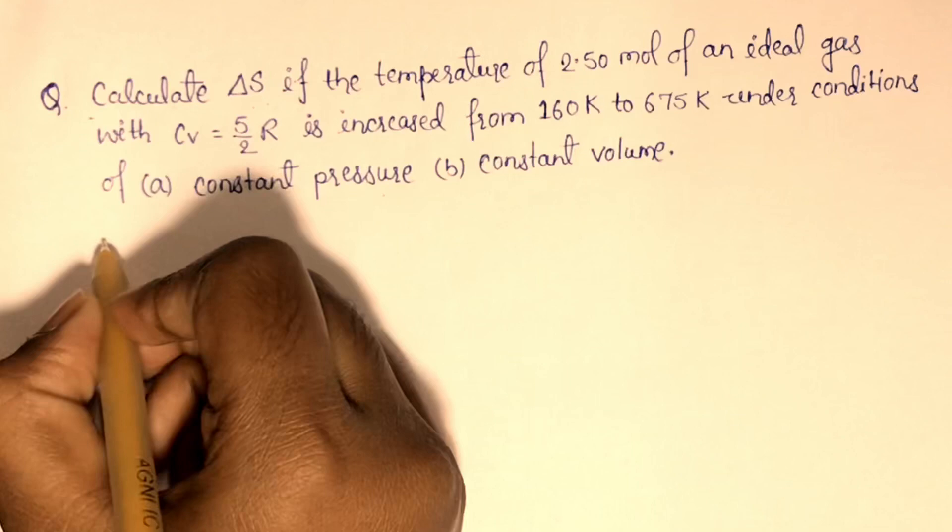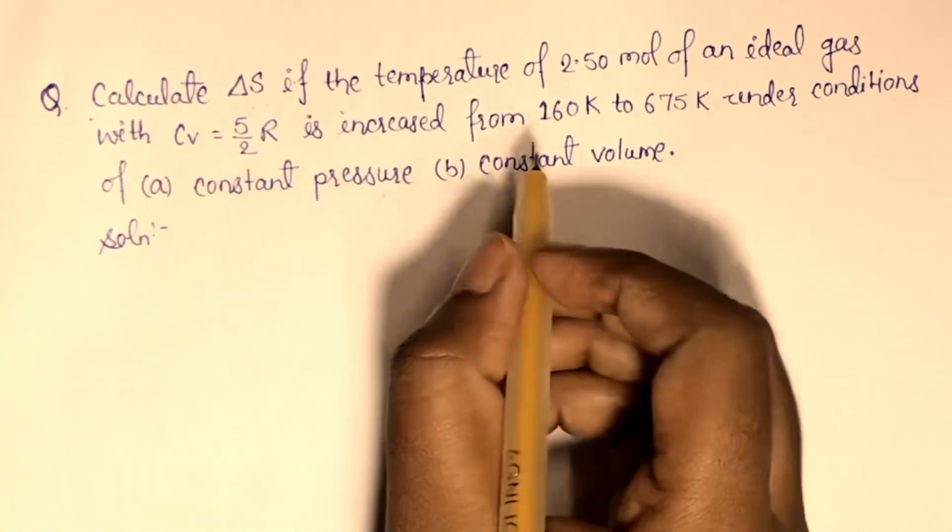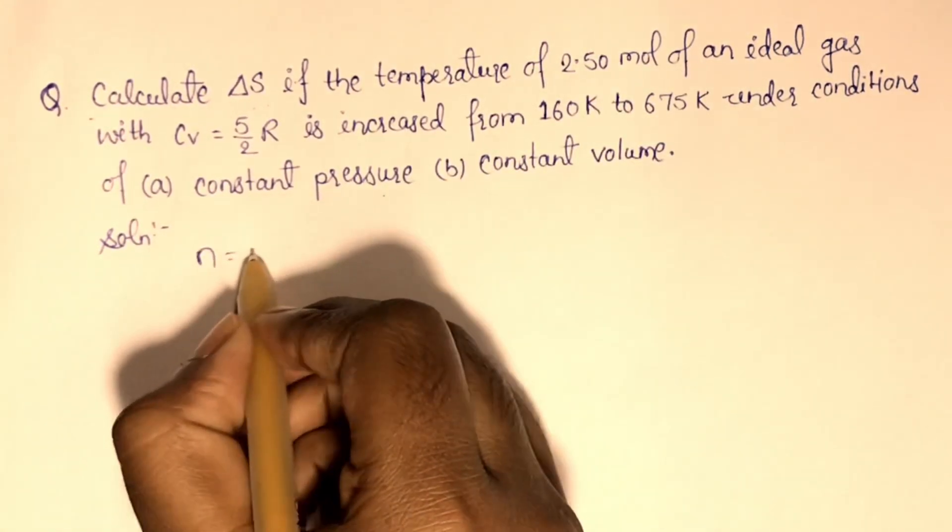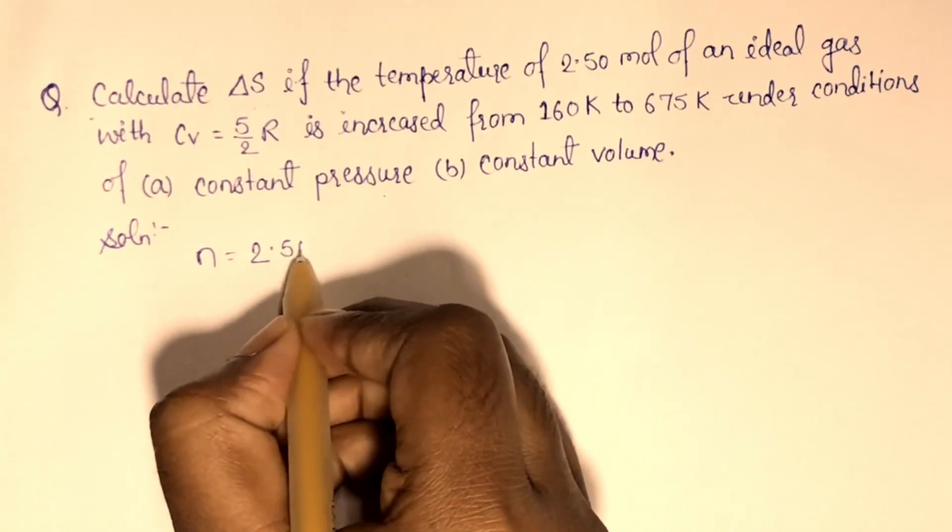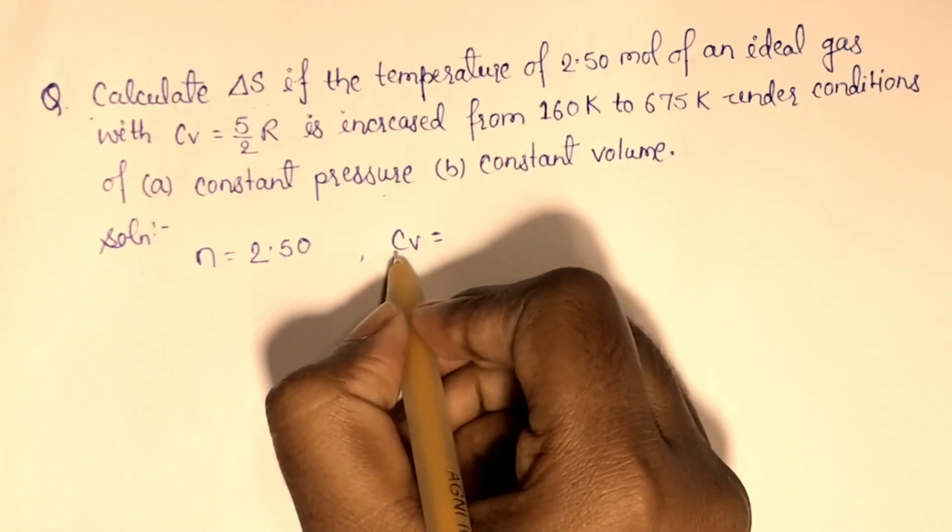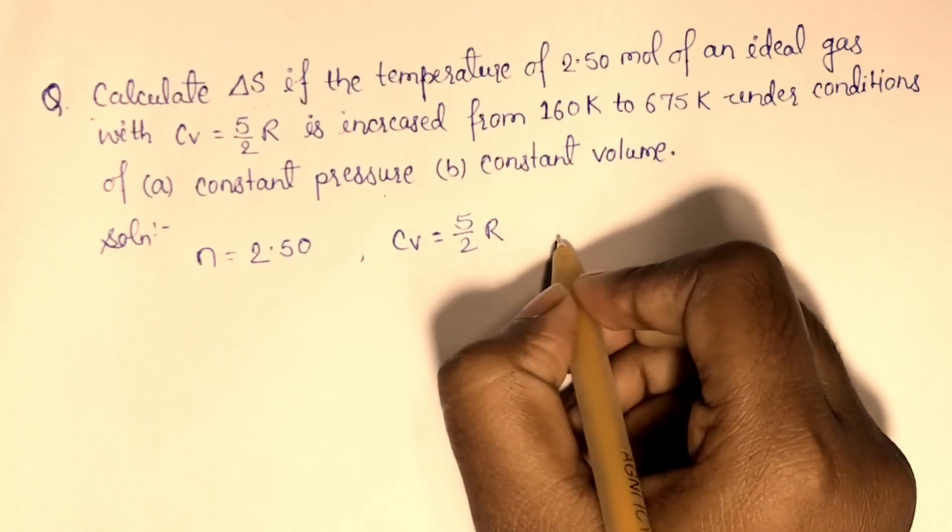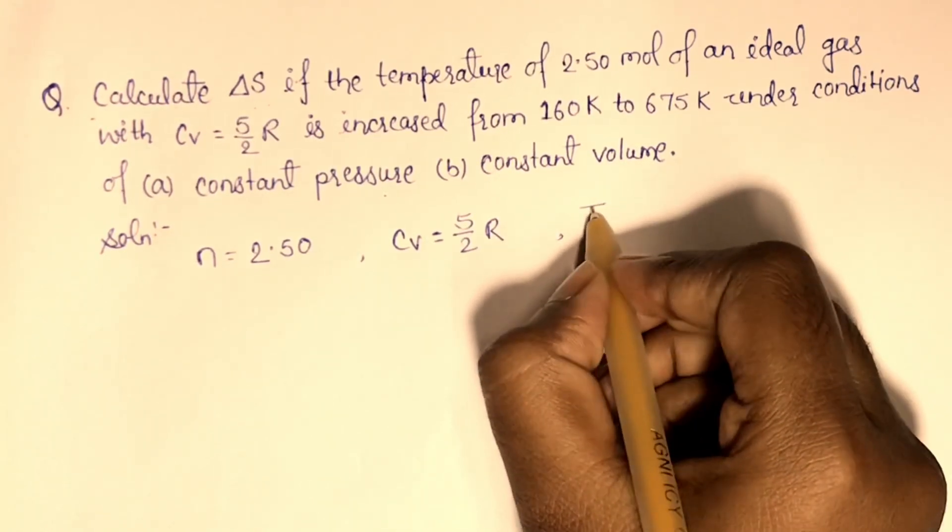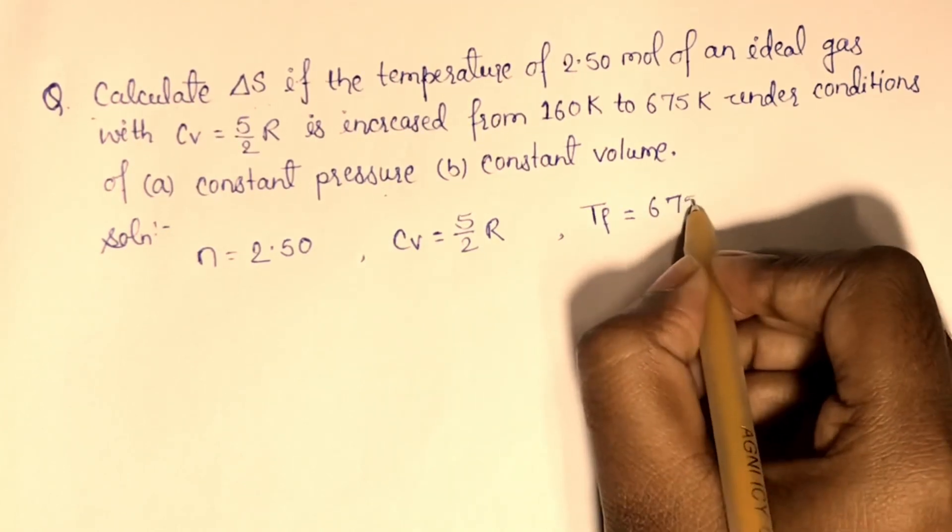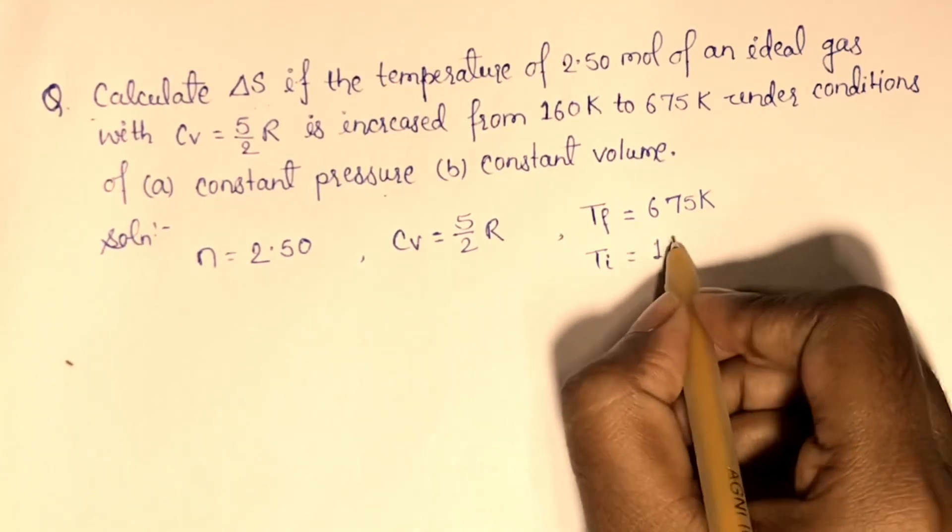Let's see the solution. First of all we will write here all the values which are given. Here mol is given, N equal to 2.50 and Cv, the molar heat capacity at constant volume, is 5 by 2 R. T final, final temperature is 675 Kelvin and T initial is 160 Kelvin.